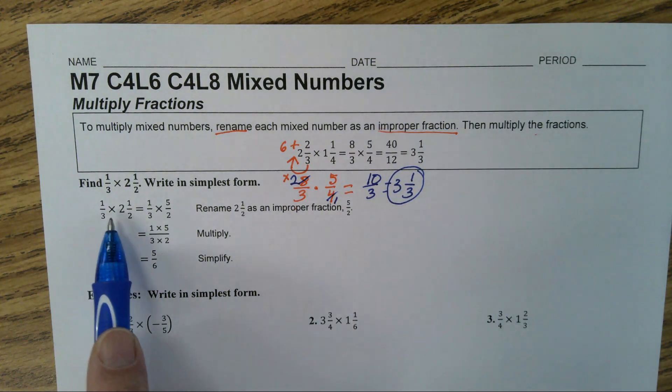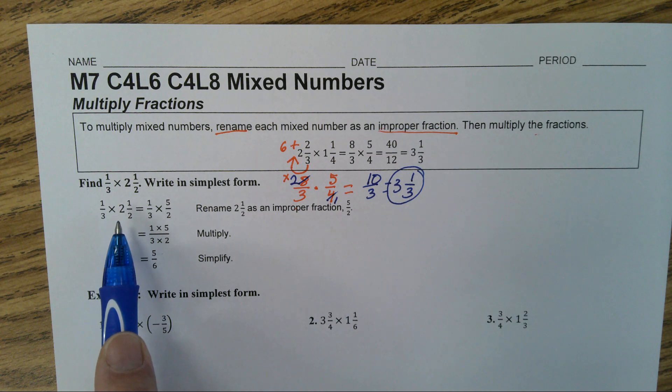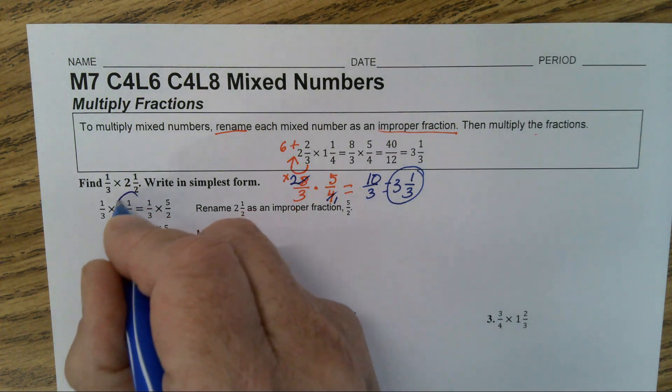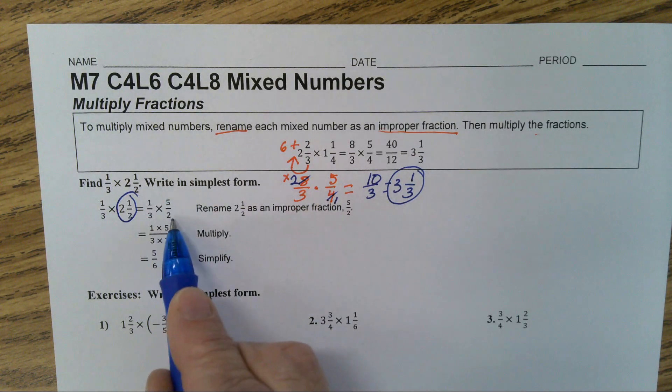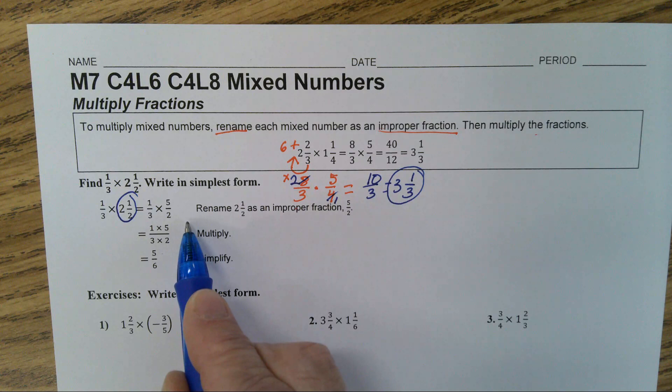1 third times 2 and 1 half. You multiply, add, and put it on top. 2 and 1 half equals 5 halves. 1 third times 5 halves equals 5 over 6.